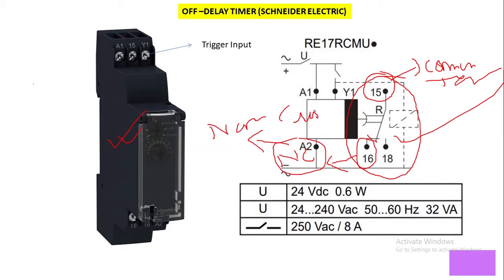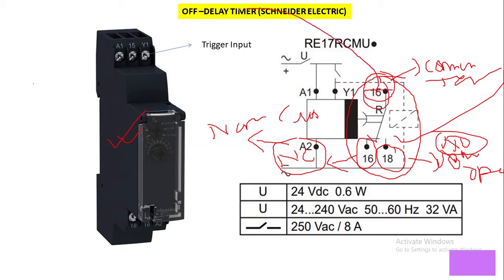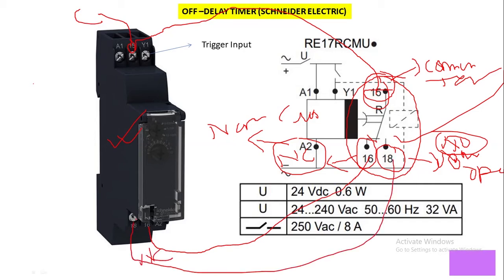Terminal 16 is the NC contact — normally closed contact — and terminal 18 is the NO contact — normally open contact. Looking at the timer physically: 15 is the common terminal, 16 is the NC terminal, and 18 is the NO terminal.